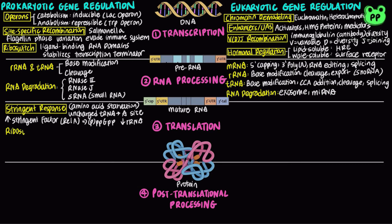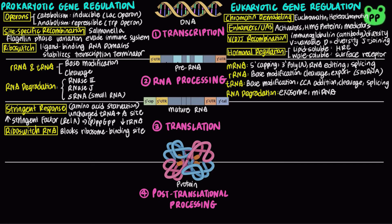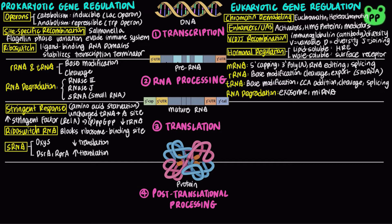As mentioned earlier, riboswitch RNA also regulates bacterial translation. The binding of an mRNA's riboswitch to its appropriate ligand can result in the blockage of the ribosome binding site, which inhibits translation. Several small RNAs, abbreviated as sRNAs, can also regulate translation. DsrA and RprA promote translation by pairing with one strand of a stem-loop structure that otherwise blocks the ribosome binding site, whereas OxyS blocks translation by pairing with the ribosome binding site.